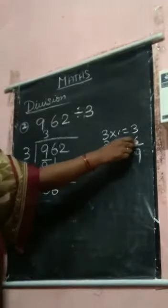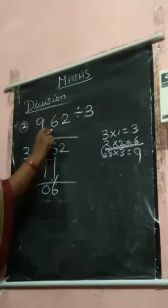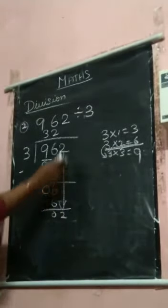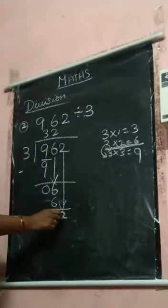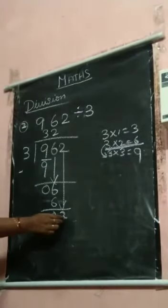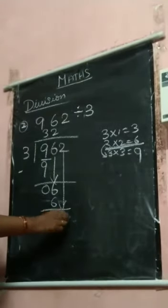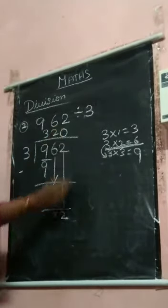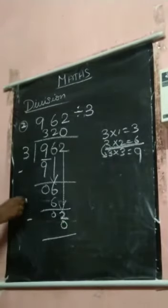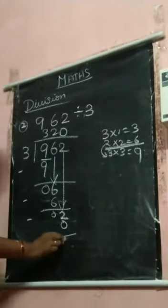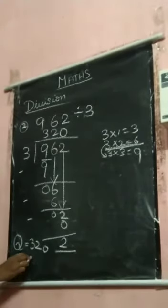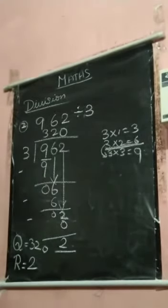When will 6 come in the 3 times table? 3 2's are 6. Subtract: 0. You bring down this 2. No more numbers. 2 is smaller than 3, so you bring down 2 as a remainder. 3 0's are 0, after that you subtract: 2 minus 0 is 2. Quotient is 320, remainder is 2.